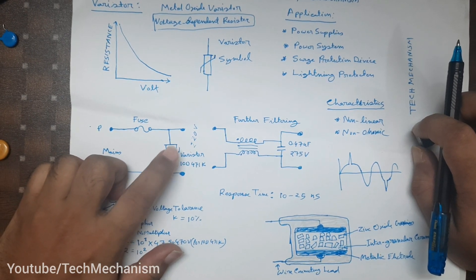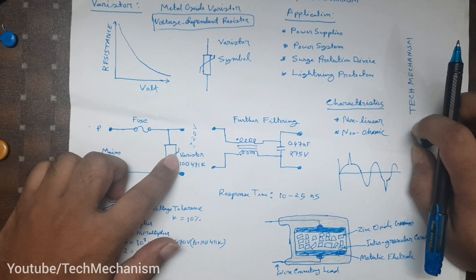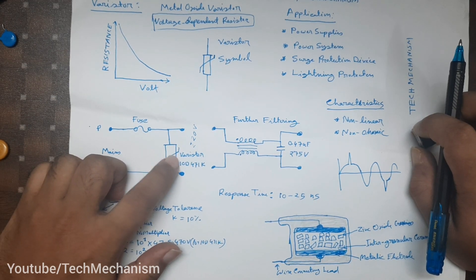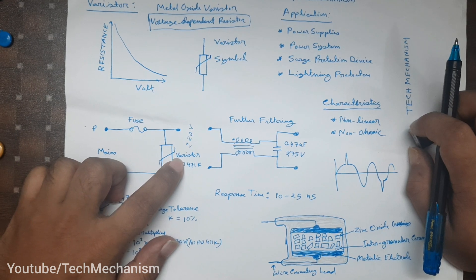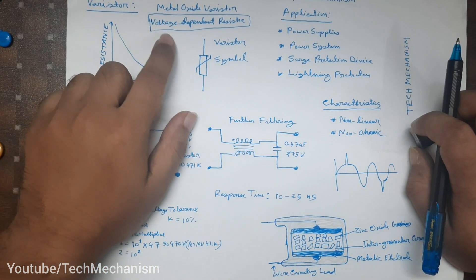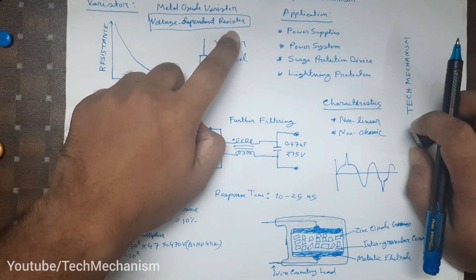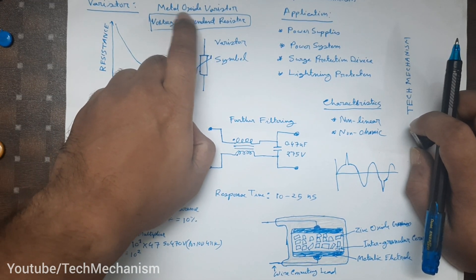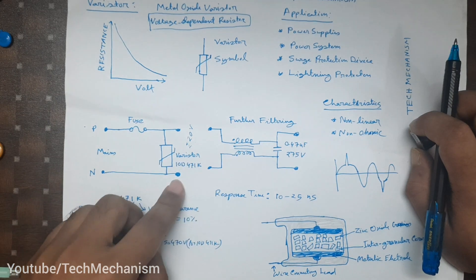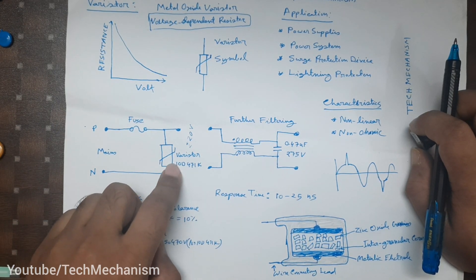A varistor is a special type of electric part which varies its resistance based on voltage. It's basically a variable voltage dependent resistor. This varistor is a metal oxide varistor.